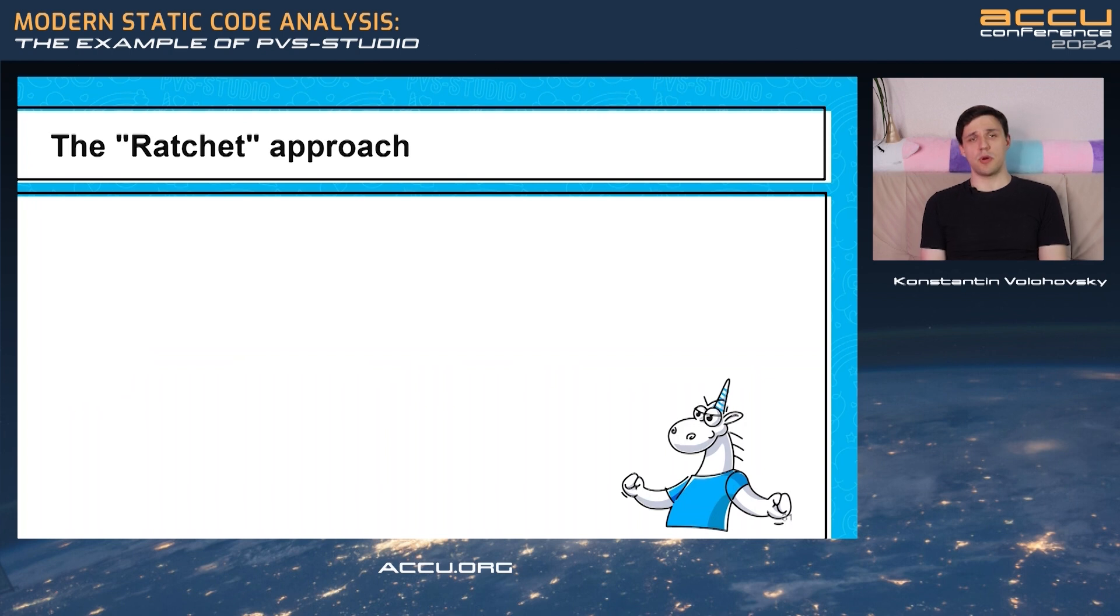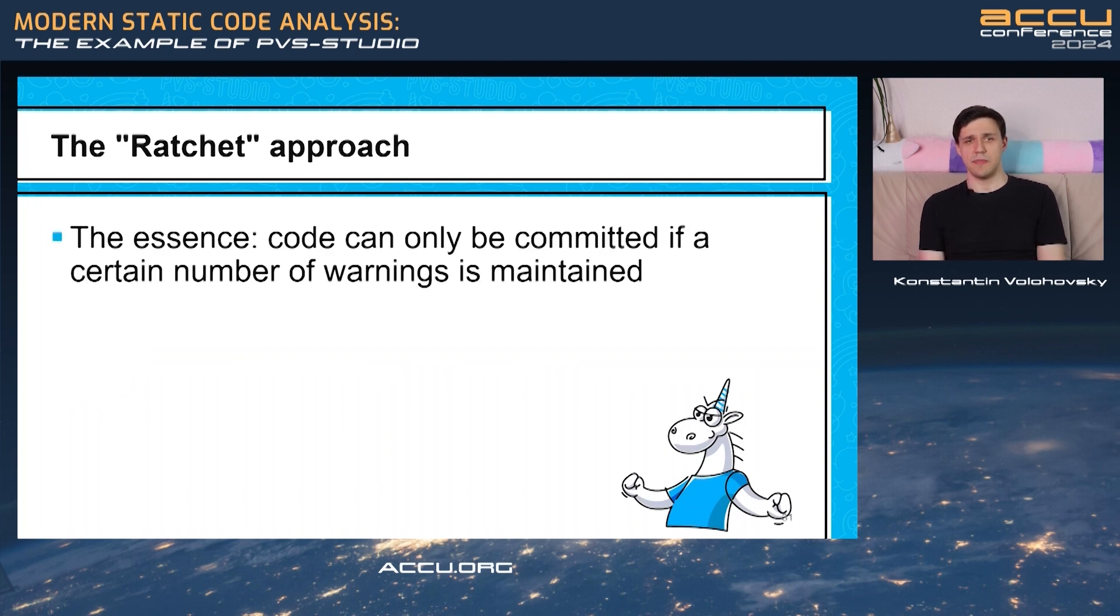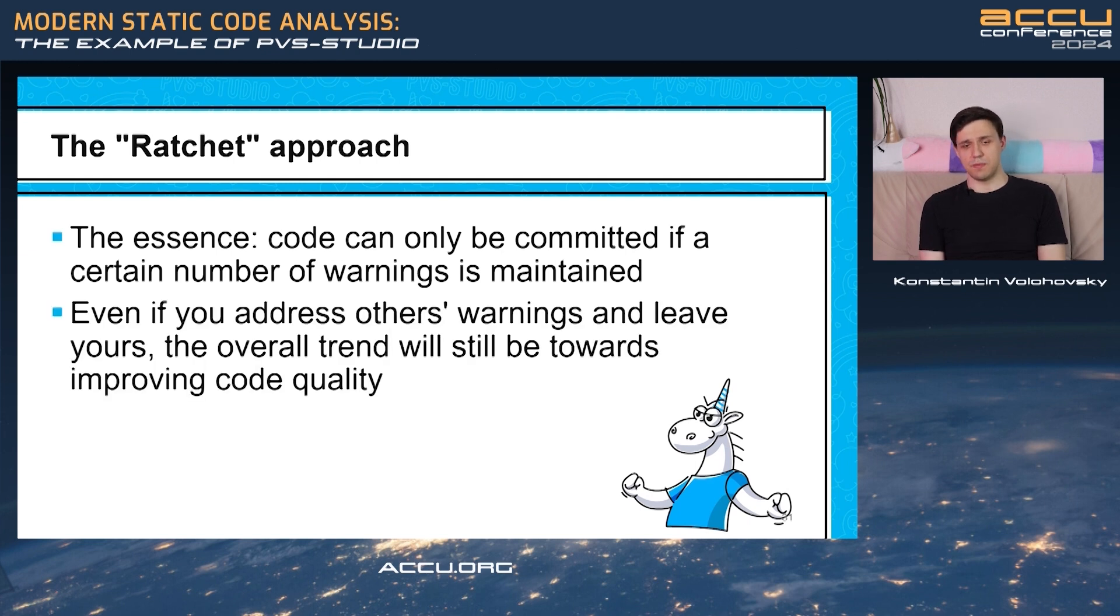There are a couple of approaches you can use. The first one is the ratchet approach. The gist of it? A developer can only commit code if a certain number of warnings is maintained. In this approach, even if a developer fixes others' code instead of theirs, the overall trend will still be towards better quality of the code.